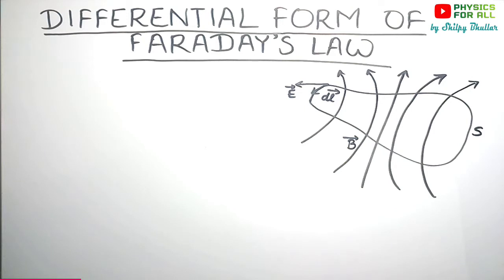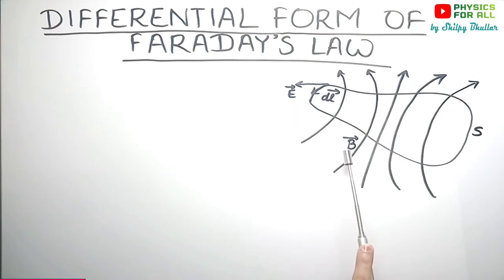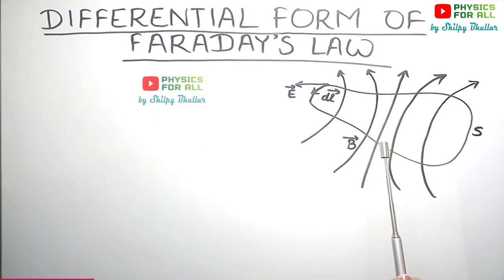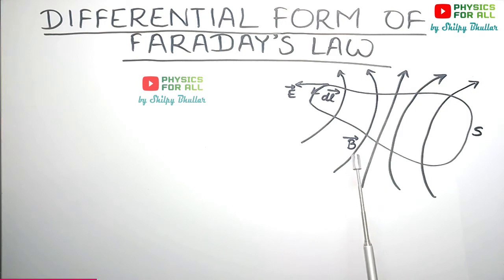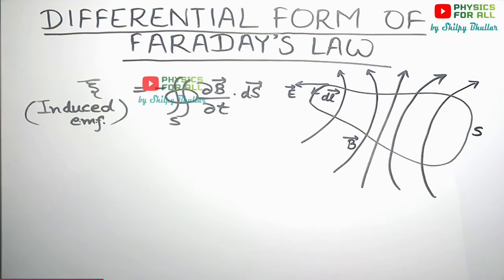Faraday's second law states that the magnitude of the induced EMF is directly proportional to the rate of change of magnetic flux associated with the closed circuit. Rate of change of magnetic flux means dΦ/dt, and that is proportional to the magnitude of the induced EMF generated.